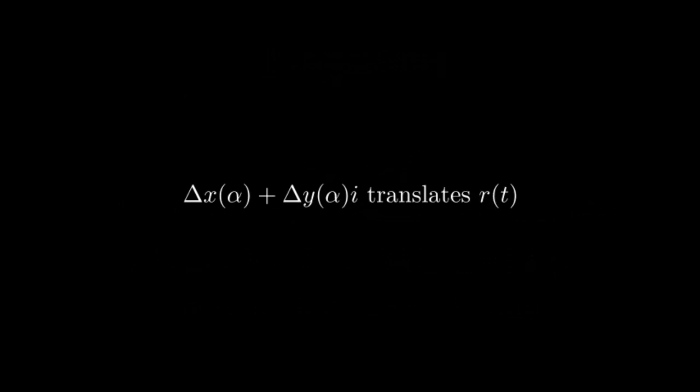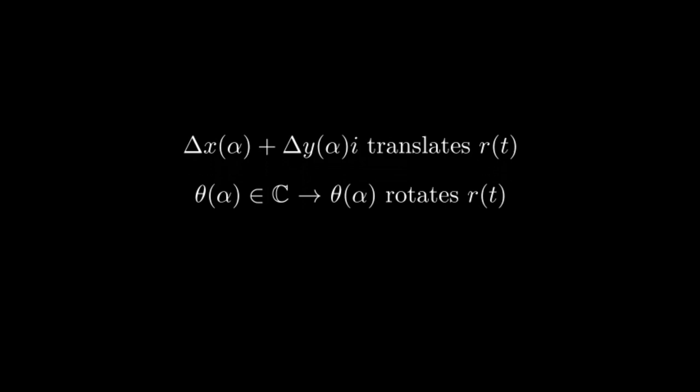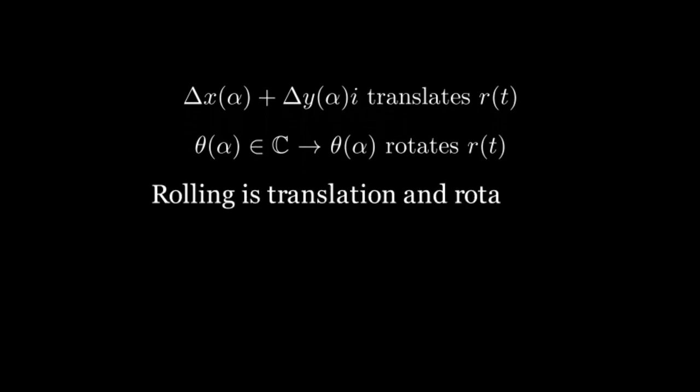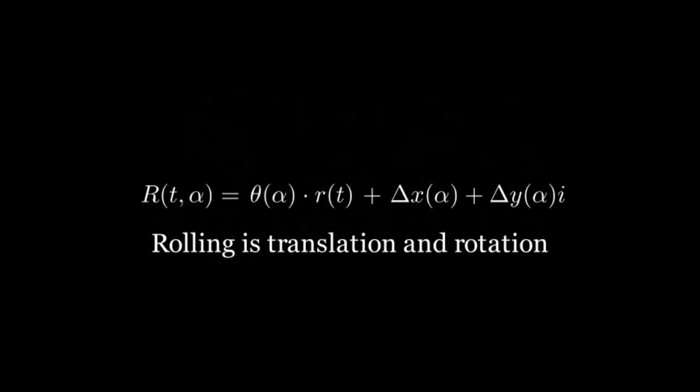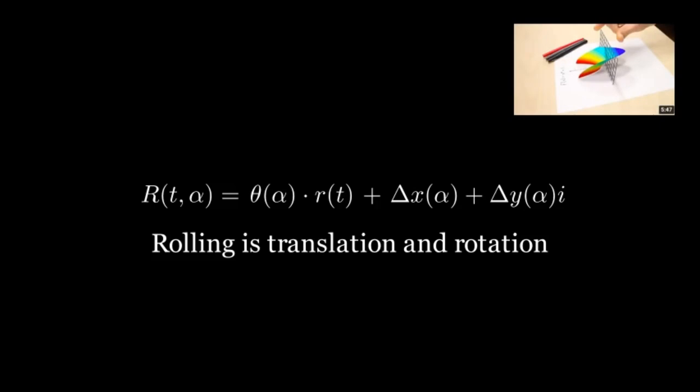Because adding two complex numbers acts as a translation, and multiplying complex numbers acts as a rotation, we can write big R as a product and sum of complex numbers. If you are curious as to why complex numbers behave this way, I have linked an excellent series by Welch Labs, which gives a fascinating and comprehensive introduction to this topic.